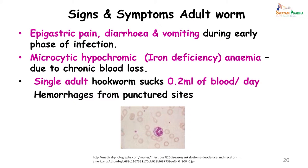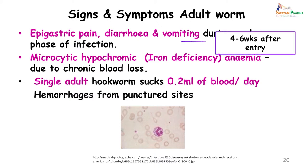Each adult hookworm sucks about 0.2 milliliter of blood per day, and hemorrhage at the puncture sites continues even after the worm has moved away. Epigastric pain, diarrhea, and vomiting usually occur 4 to 6 weeks after ground contact.